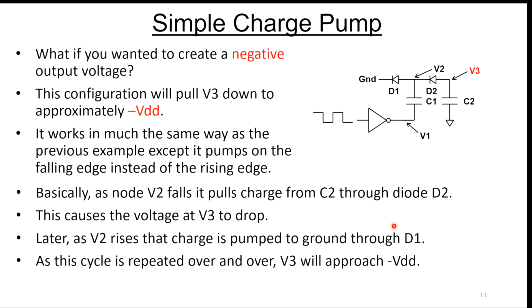That shows you how to create a positive voltage. What if you want to create a negative voltage, a voltage that's lower than the ground on your circuit? Here's a way to do it. All we've done here is we've just taken this, and we've changed the diodes. We've flipped them in the other direction. And instead of hooking VDD here, we've hooked ground to this node.